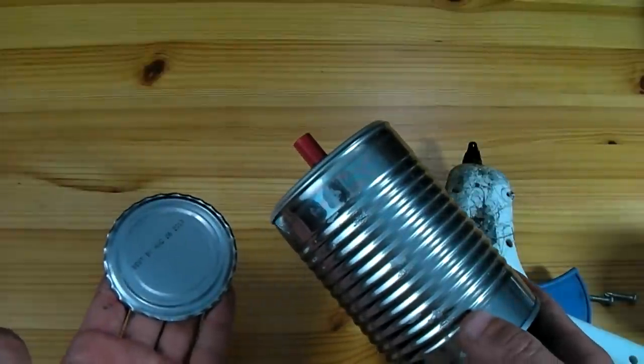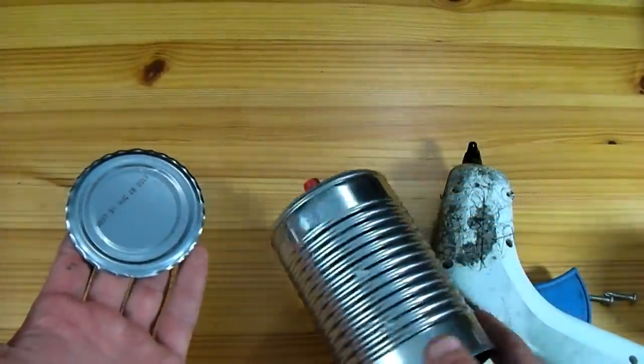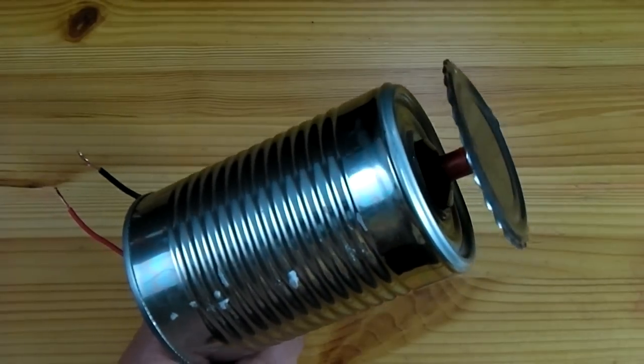Once the igniter has been glued in, go ahead and take the lid of the can and glue that to the button on the igniter. The foot pedal for the mine is now completed.